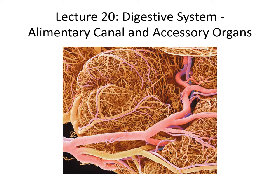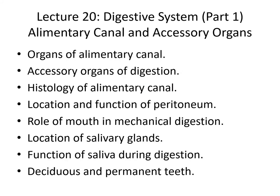We'll also mention today the accessory organs of the digestive system. So in this first lecture, we're going to identify the major parts of the alimentary canal. We'll mention the accessory organs and we'll outline the histology of the alimentary canal. We're going to find that this basic plan will be modified throughout the rest of the digestive system. We'll mention the peritoneum and talk about the first part of the alimentary canal, including the mouth, salivary glands, and the esophagus.